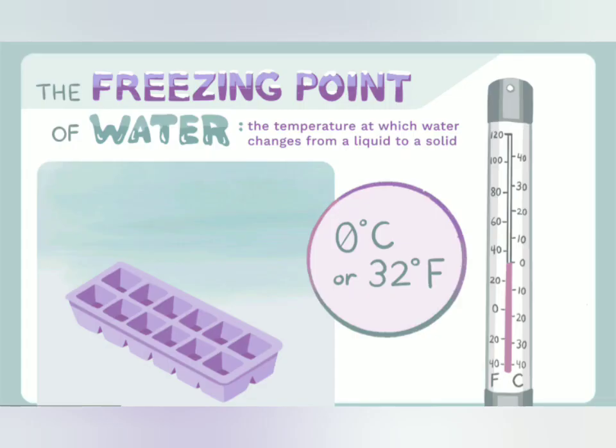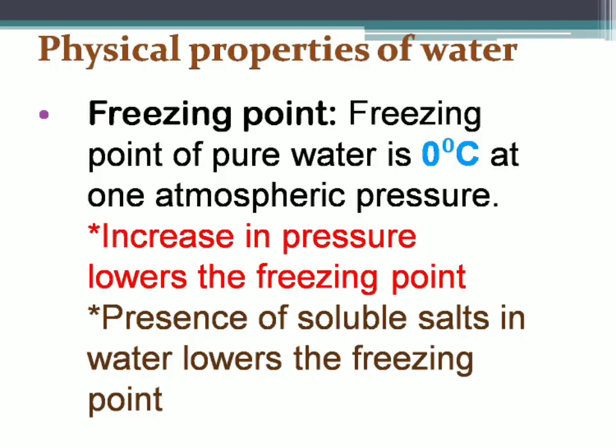The freezing point of pure water is zero degrees Celsius at one atmospheric pressure. The freezing point also gets affected by change in pressure and impurities. An increase in pressure lowers the freezing point of water. This happens because water expands when it freezes, so if we compress it, it becomes more compact liquid water.